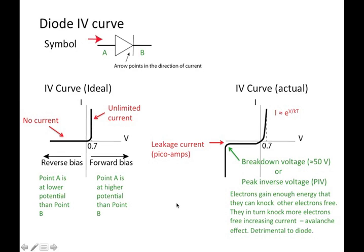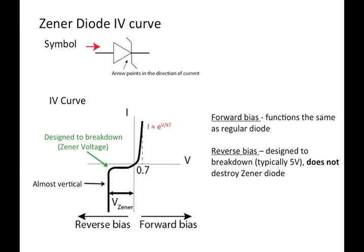Okay, so that's the regular diode. It turns out to take advantage of the breakdown, you can also create a Zener diode. So the symbol is the same as before, only we have these lines that kind of branch off. And again, the triangle points in the direction of the forward bias current.